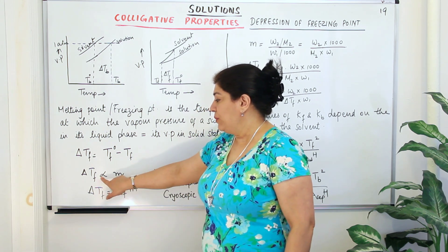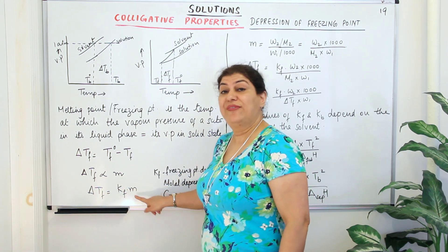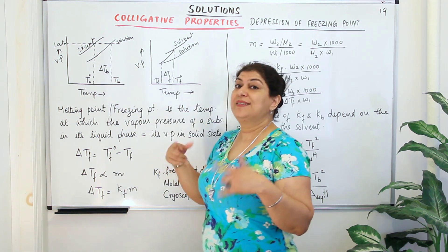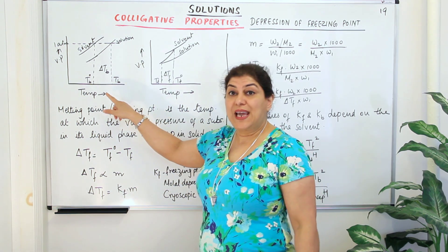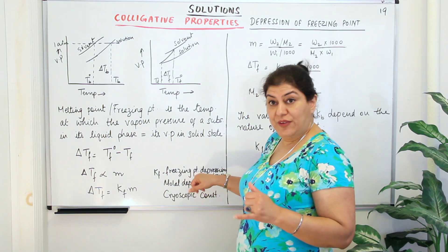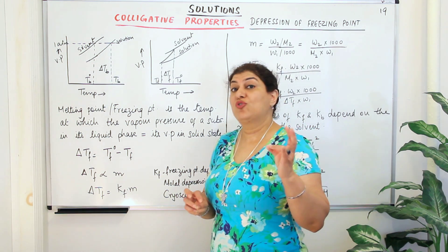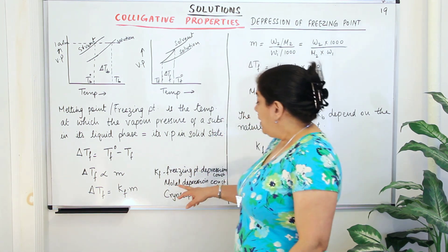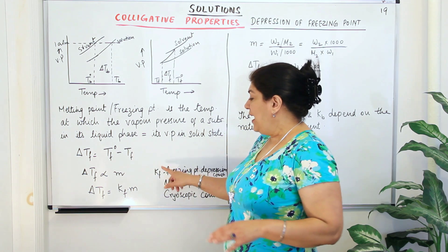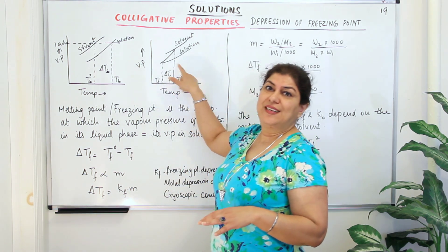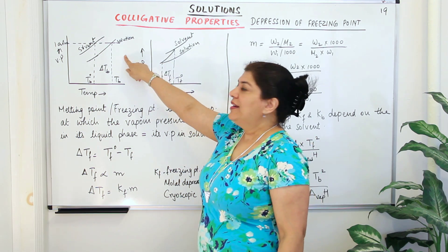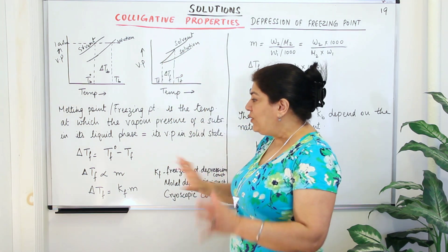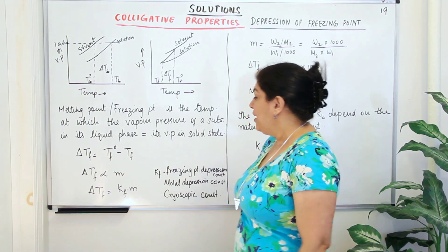Removing the sign of proportionality, delta Tf becomes equal to Kf·m. In the previous case delta Tb was equal to Kb·m, where Kb was the molal elevation constant, also known as the ebullioscopic constant or boiling point elevation constant. Similarly Kf is the equivalent constant for freezing — the only difference being that here liquid is turning into solid instead of vapour. Otherwise, you will find similar terms in both calculations.